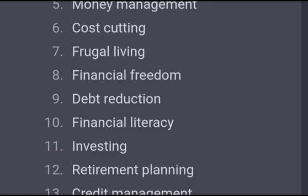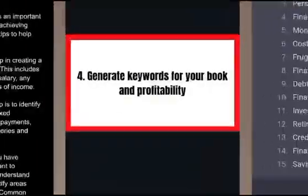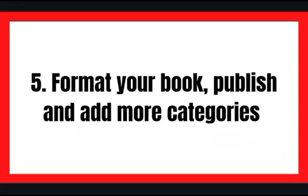You can easily copy all these keywords and paste them into your Google Doc to check for the profitability of each one on Amazon. If you don't have enough, you can come back and ask for more keywords. The next step — formatting your book, publishing, and adding categories — we've covered this in almost all the other sections. Just follow the steps in this video course on how to use Chat AI to generate content for your book. See you some other time, thank you.